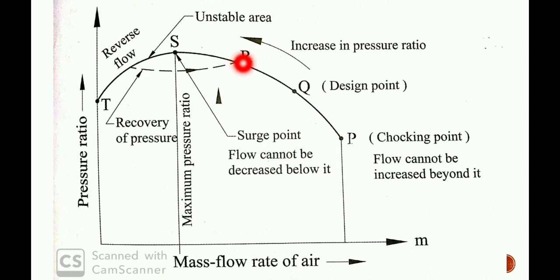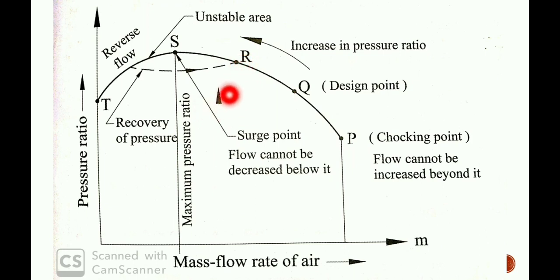As the delivery valve is further closed, the mass flow rate decreases further and the pressure ratio increases. The operating point again shifts towards the left side — towards higher pressure ratio and lower mass flow rate.